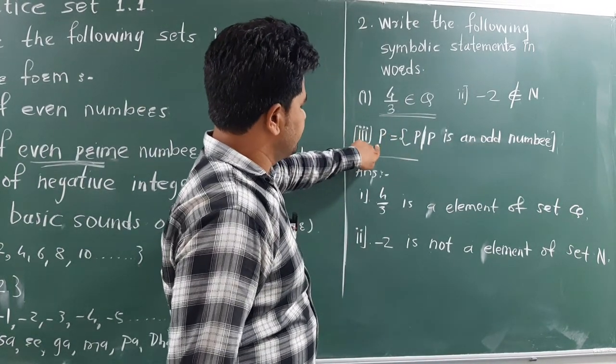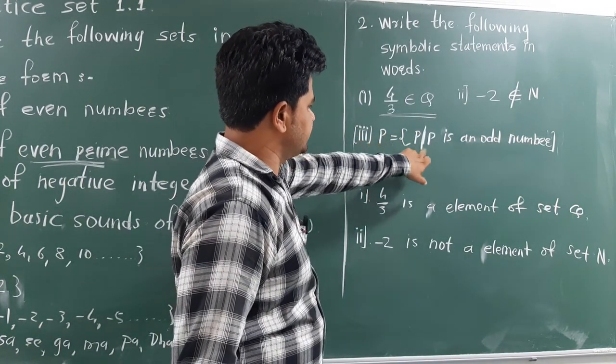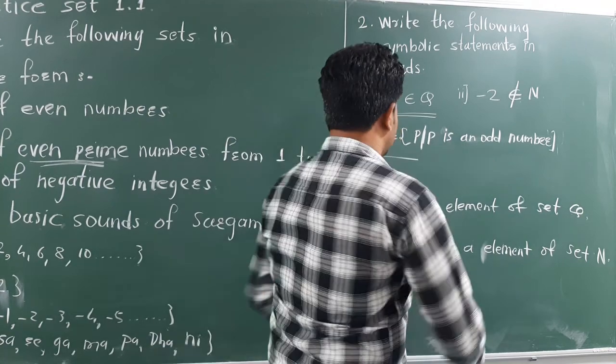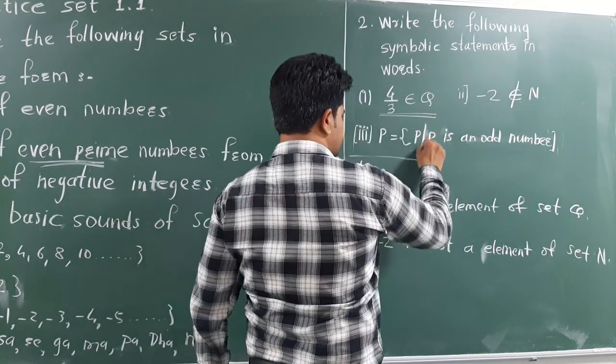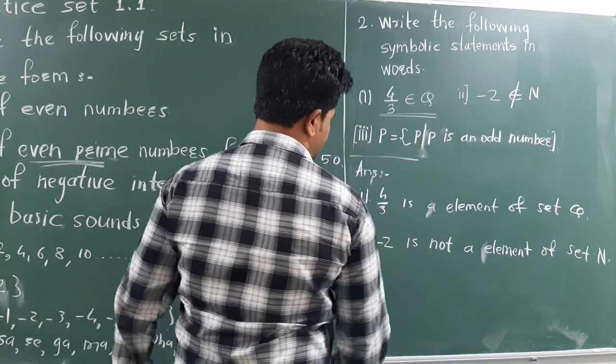Now, last one. P is a set of P elements such that P is an odd number. This line shows that, or meaning is that, such that. So, how can we write?